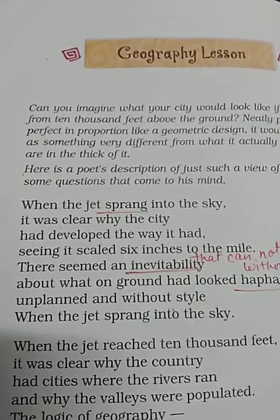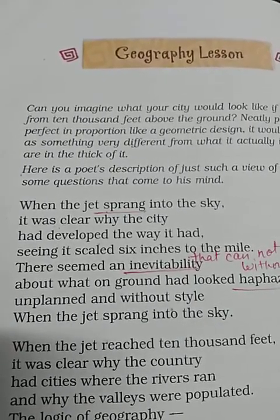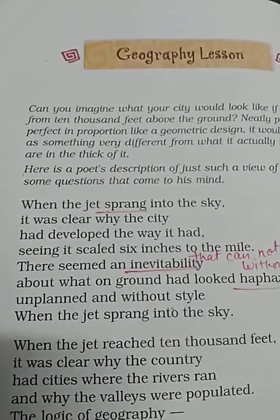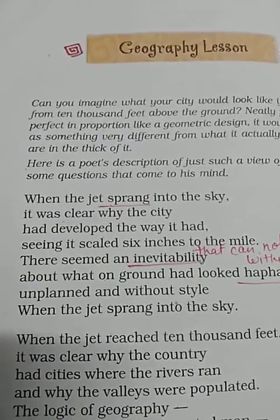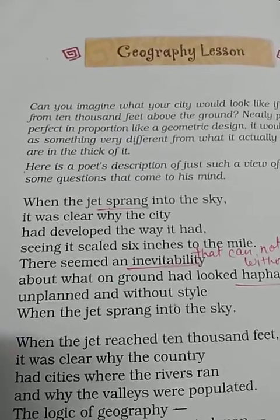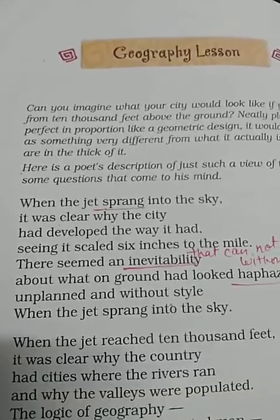By repeating the height of the jet at the start and end of the stanza, we are reminded of the altitude and are able to imagine the movement of the jet and the sizes of the earth from different altitudes. The poet also figures out the inevitability of the way the city was developed — urbanization emerged to build more and more buildings due to population increase and man's greed. Thus, the city grew in a haphazard manner.